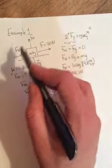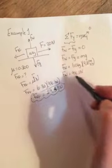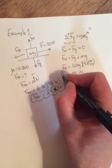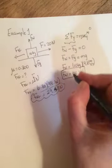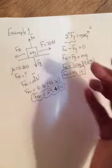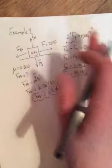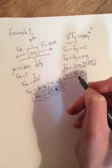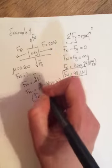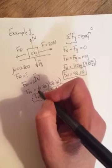So our first step was to draw in all the forces. Then our second step was to do sum of the forces in the y direction to find our Fn. Whenever there's friction, that's where we'll always start - sum of the forces in the y to find Fn - so that then we can go to the friction equation and use that Fn.